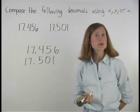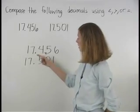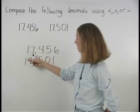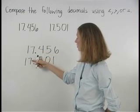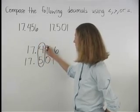Next, compare the digits place by place starting at the left of each number. So here, 1 and 1 are the same, 7 and 7 are the same, but notice that 4 is less than 5.